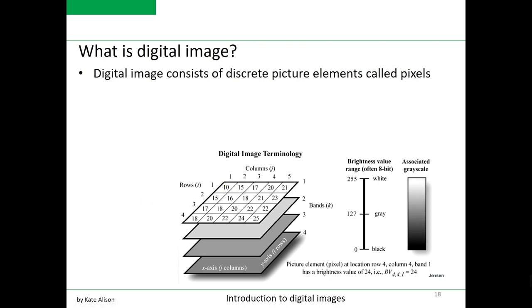The digital number, DN, also referred to as a brightness value or pixel value, corresponds to the average radiance measured in each pixel shown in the figure.